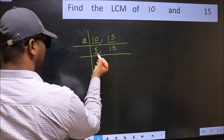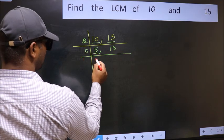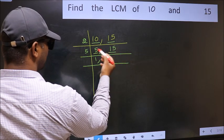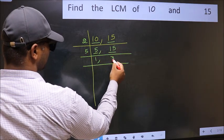Now here we have 5. 5 is a prime number, so 5 times 1 is 5. The other number is 15. When do we get 15 in the 5 table? 5 times 3 is 15.